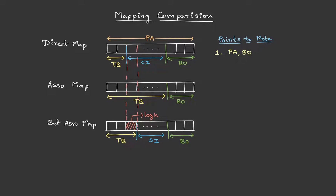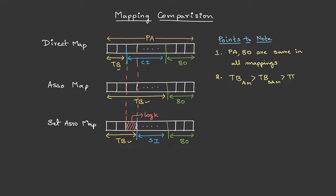Here are a few points to note. First, the physical address bits and the block offset bits are actually the same in all three mappings. Next, from the diagram we can make out that the tag bits are highest in associative mapping, next is set associative, and least in direct mapping. So the tag bit size is highest in associative mapping, next is set associative mapping, and the least is in direct mapping.